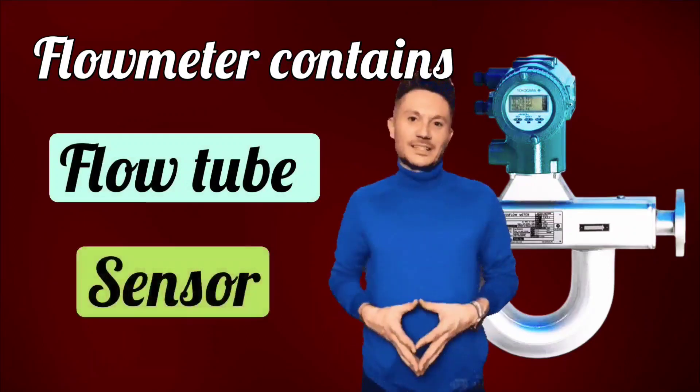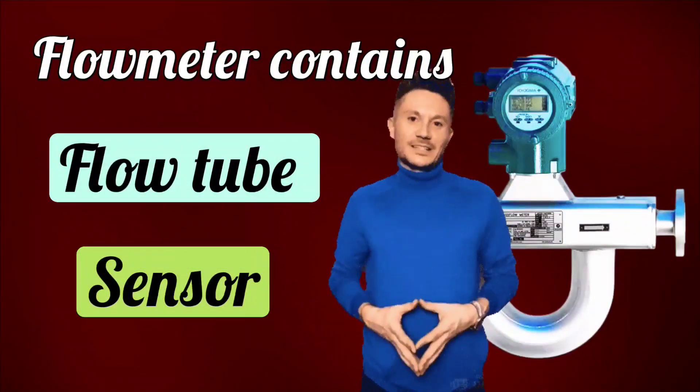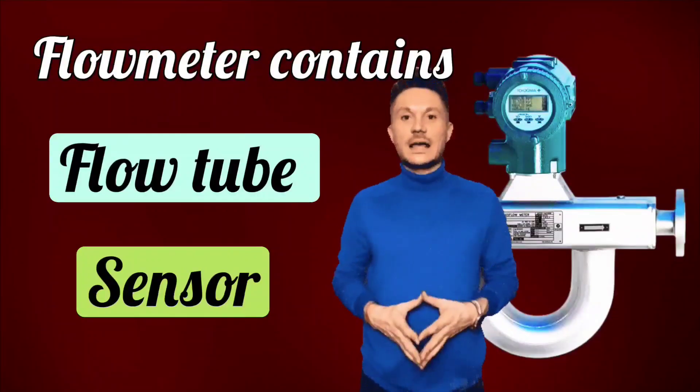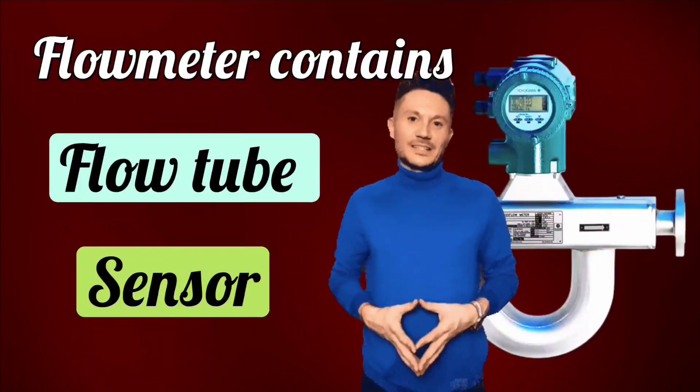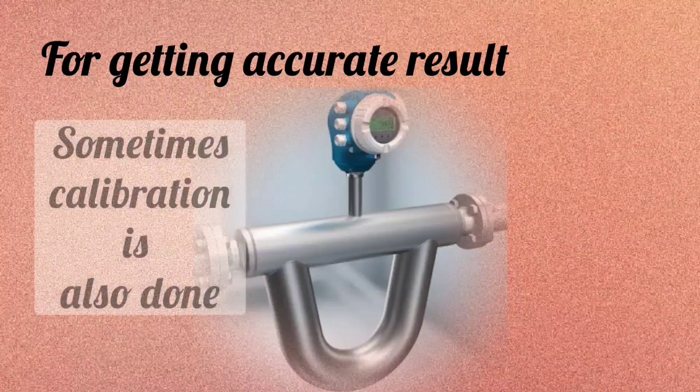In this meter, mass flow rate is measured accurately by using flow tube, sensor, pressure transducer, temperature sensing elements, and display. To get accurate result, sometimes mass flow meters are also calibrated.